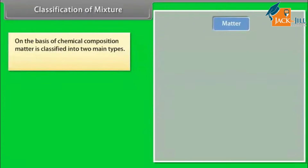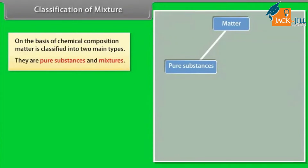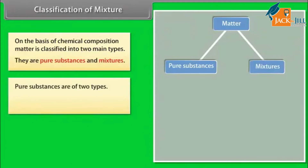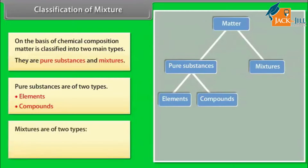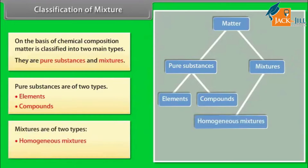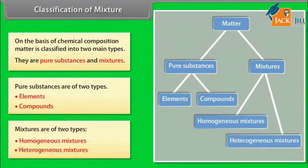Matter is classified into two main types: pure substances and mixtures. Pure substances are of two types — elements and compounds. Mixtures are also of two types — homogeneous mixtures and heterogeneous mixtures.